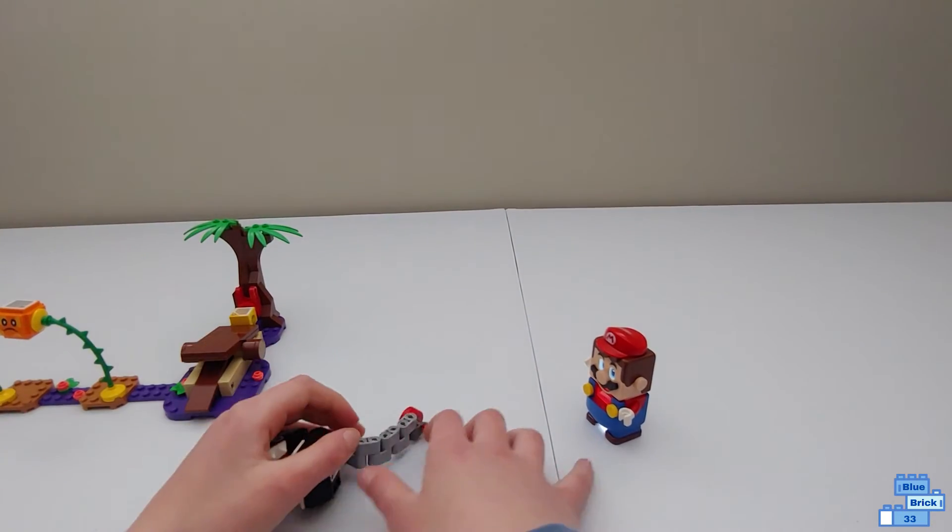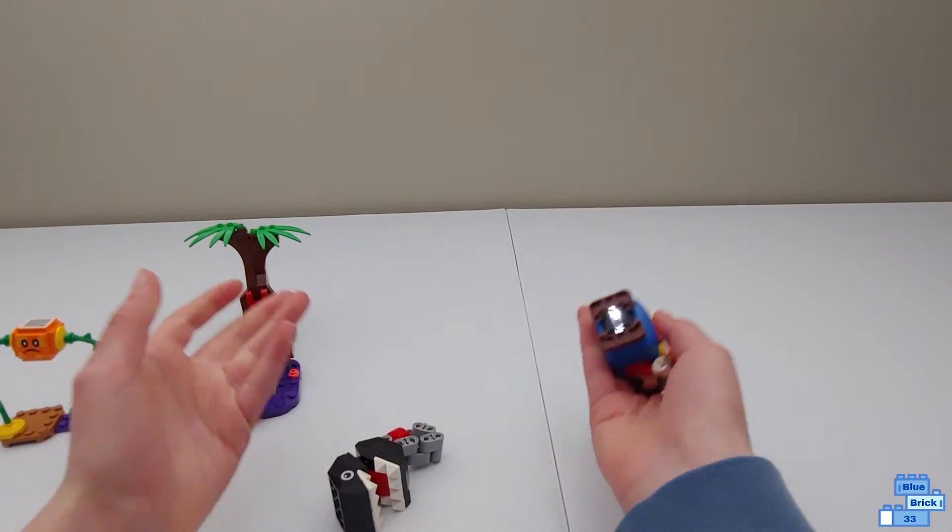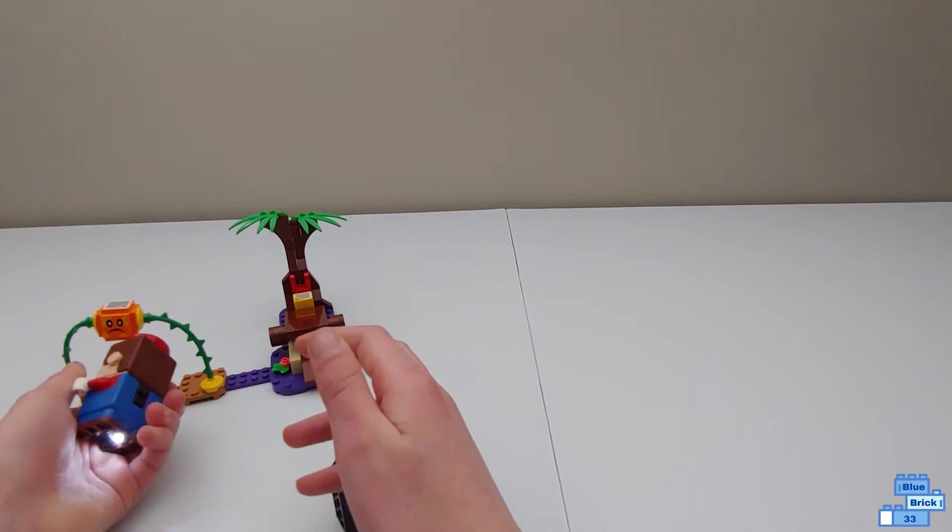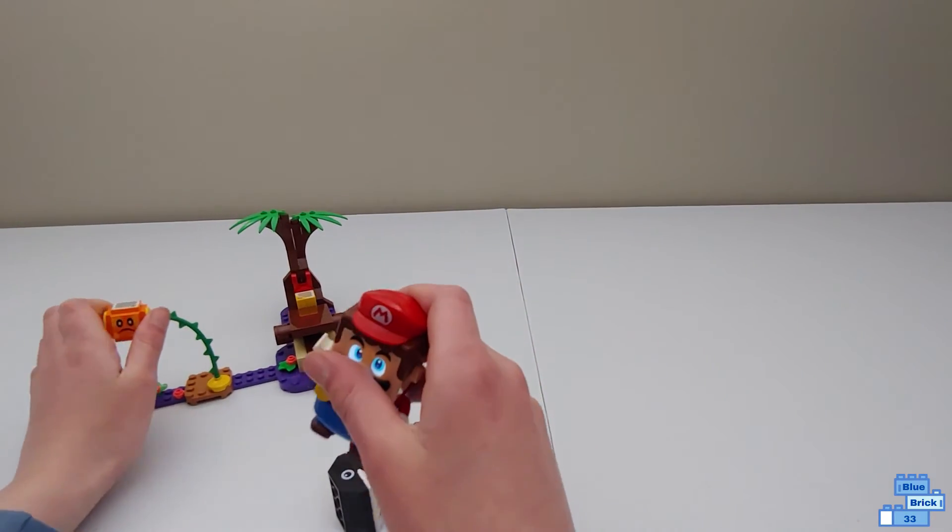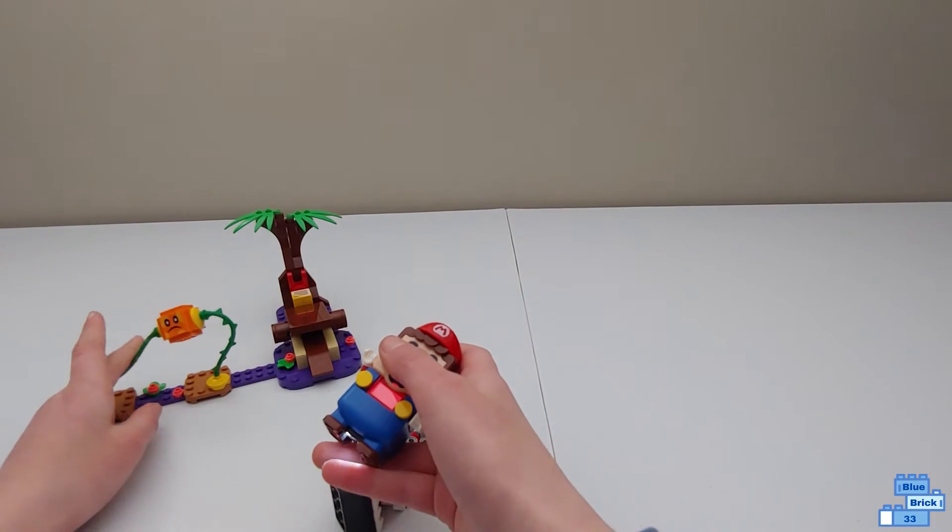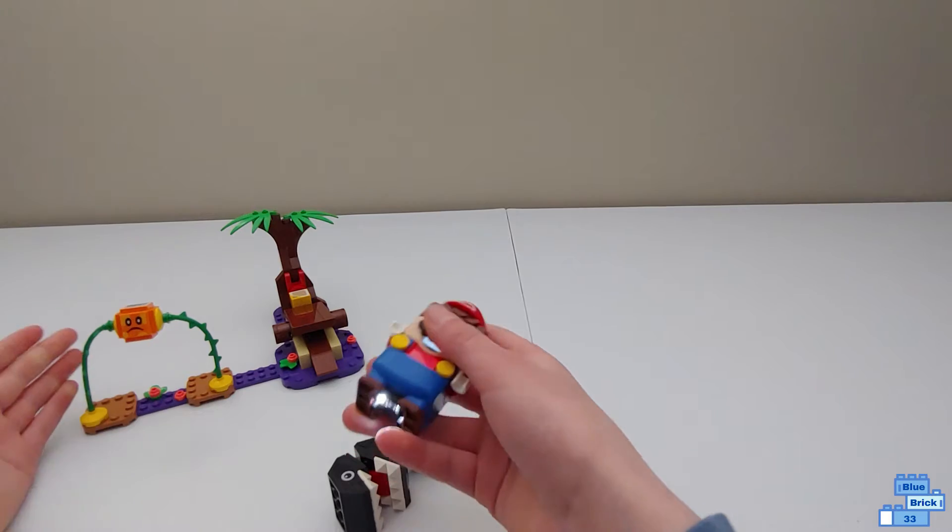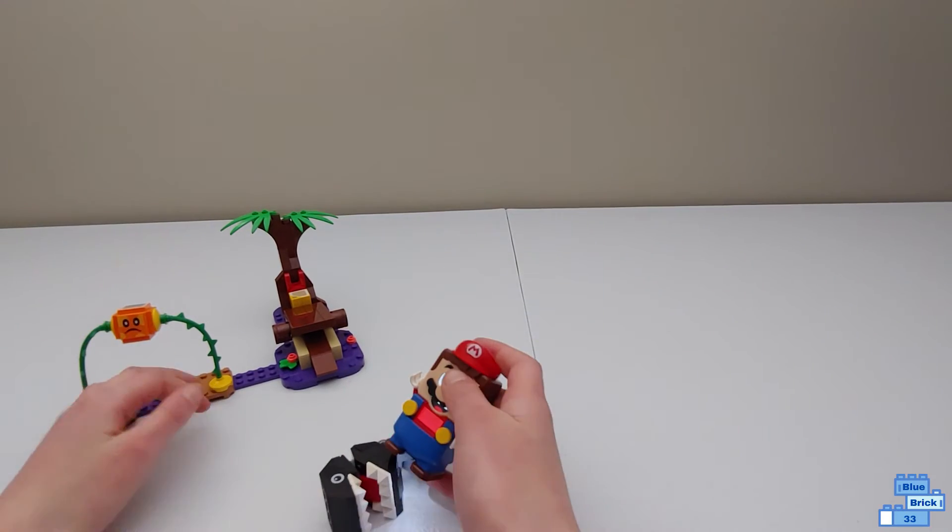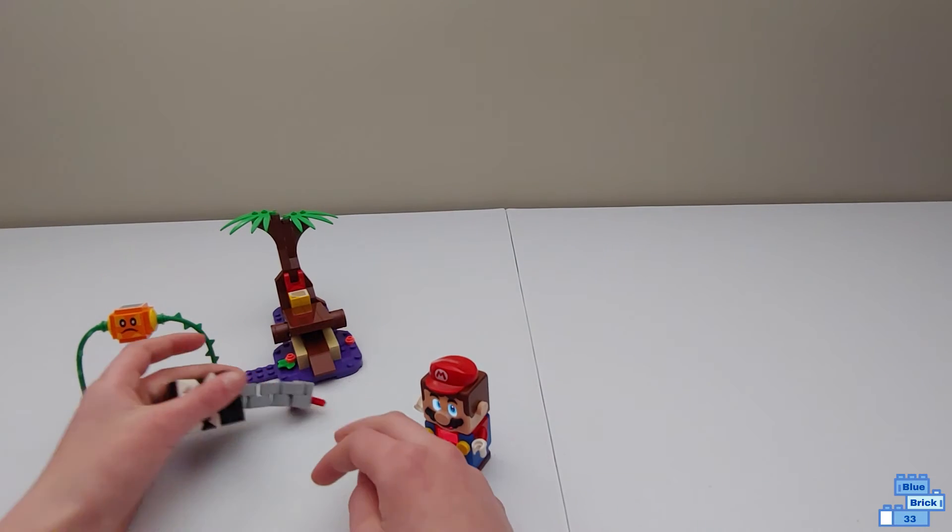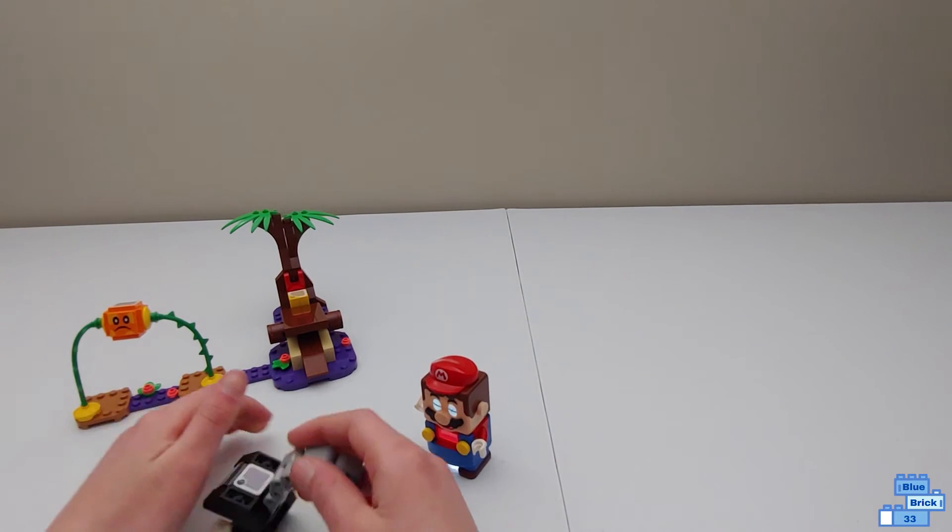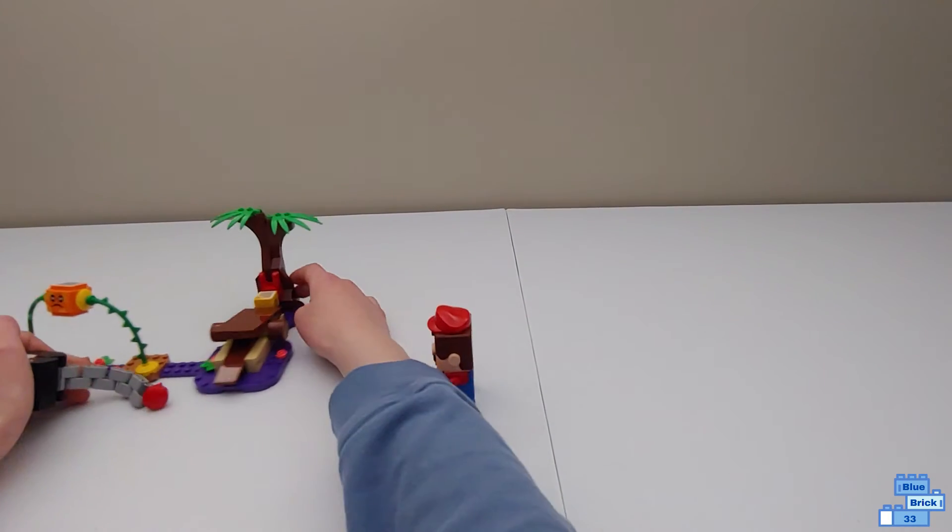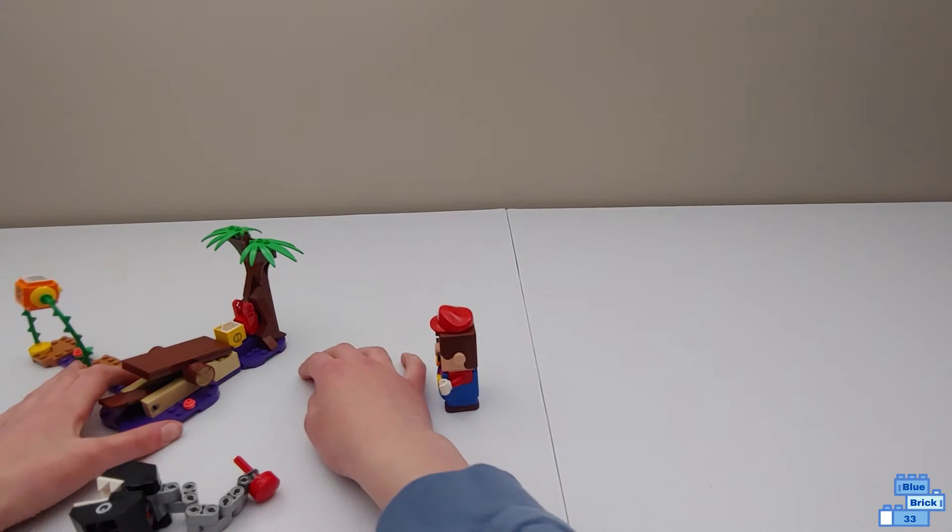A star block does not come in the set. Technically, you will be getting a question mark brick if you can play with the set, because you need Mario from the Lego Super Mario starter course. And that set comes with a question mark brick that sometimes it's like a one out of six chance. It will give you a star block, but it doesn't actually give you like a star block.